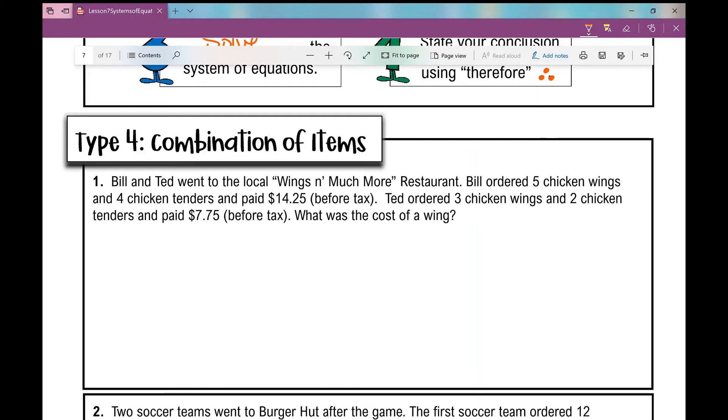So what we're basically given here is two scenarios. We're talking about chicken wings, chicken tenders, the cost involved for Bill and then also Ted. So the cost of a wing - what are we looking for? We're looking for the cost of a wing. When I identify my variables, let's let W equal wings and let's let T equal tenders, chicken tenders.